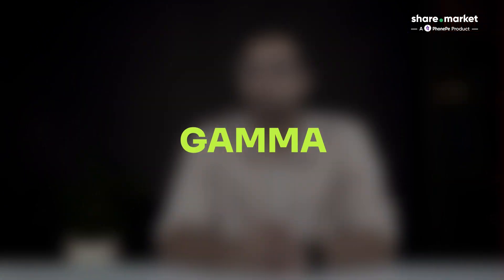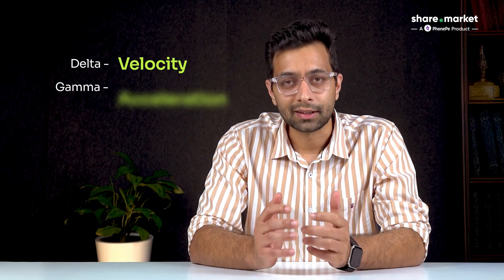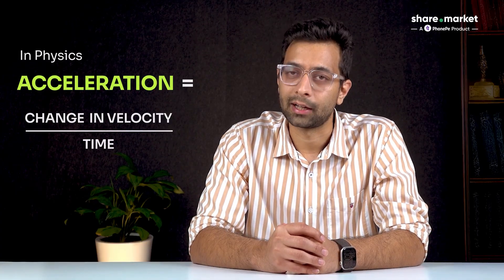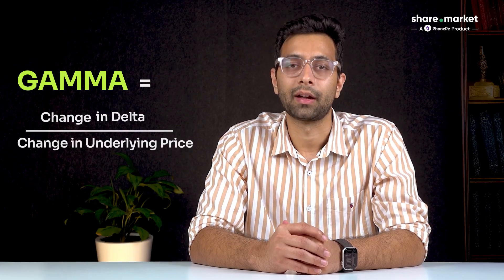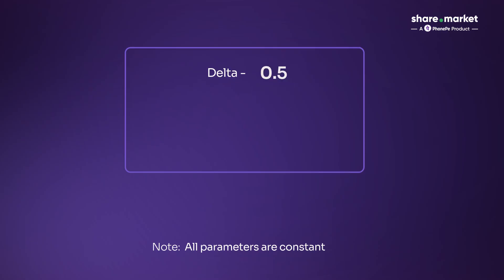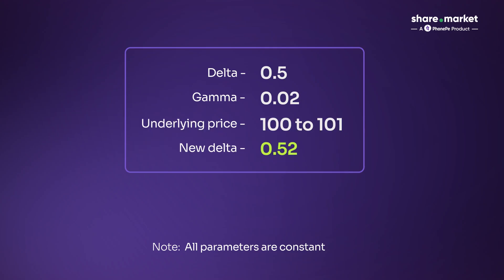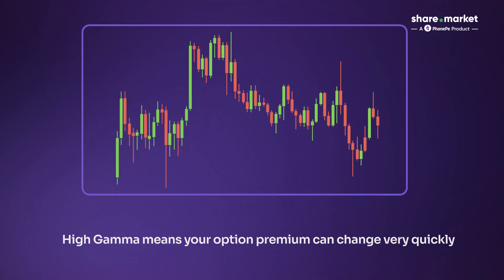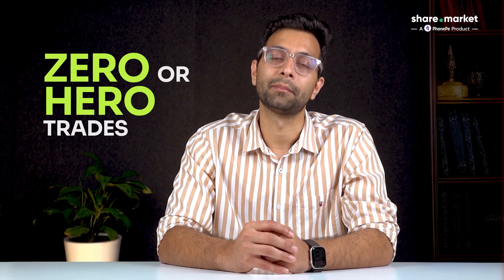Our second Greek is Gamma. If delta is the speed, then Gamma is the accelerator. In physics, acceleration is the change in velocity with respect to time. Similarly, Gamma measures the change in delta with respect to the underlying price. For example, if delta is 0.5 and Gamma is 0.02, then a one point move in the underlying will increase delta to 0.52. High Gamma means your option premium can change very quickly. Near expiry, especially at the money strikes, even a small move in the underlying can change the option premium dramatically — this is often called the zero or hero trade for option buyers.